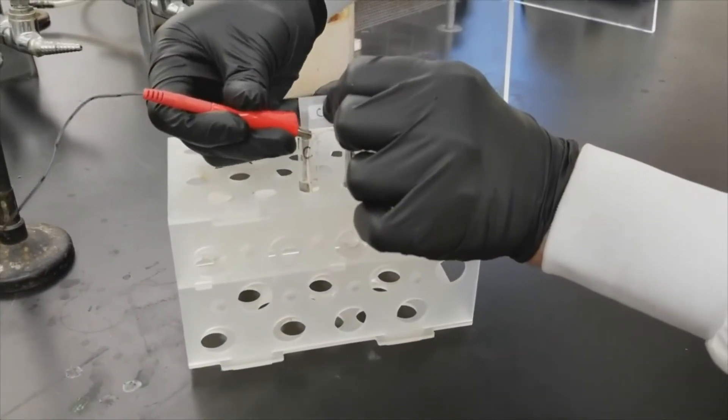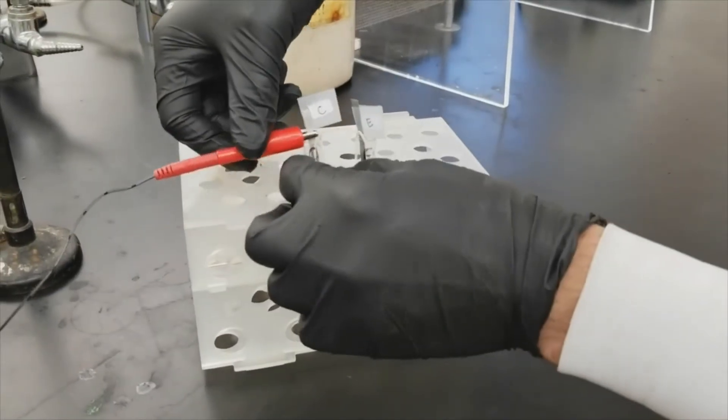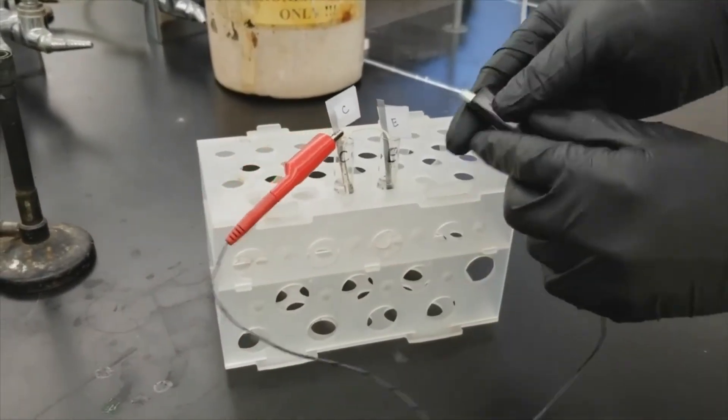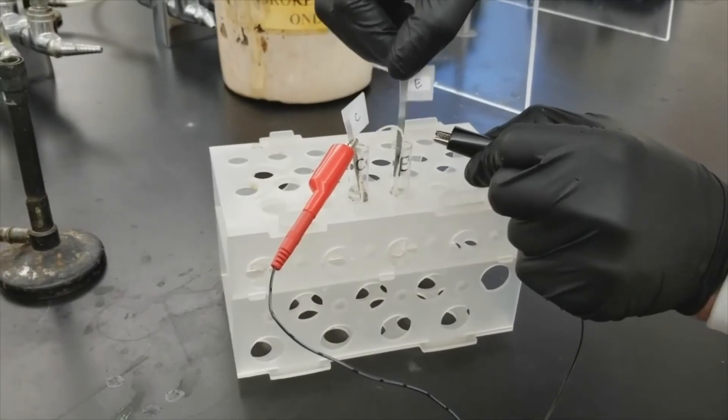Then place the clamps onto the metal electrodes. Remember the red clamp attaches to the cathode and the black clamp attaches to the anode.